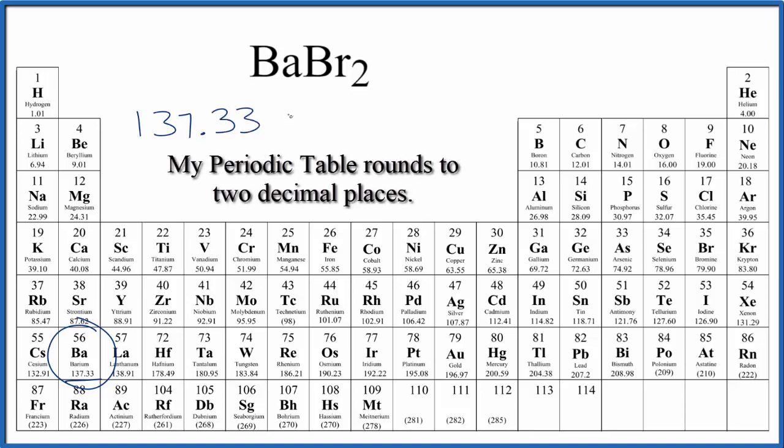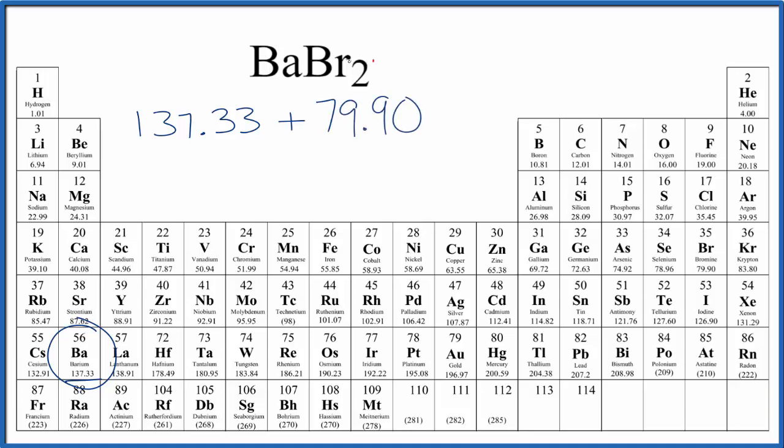Let's write those at the end though. Then we find bromine. Bromine is 79.90, and we have two of these bromine atoms, so we multiply this by two.